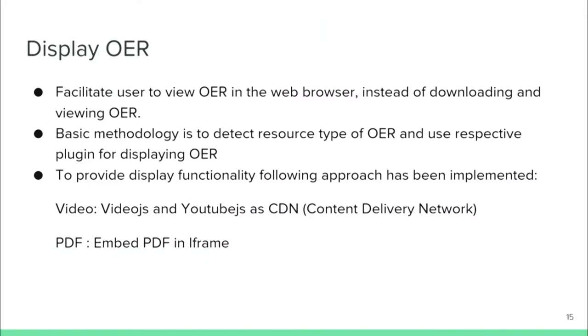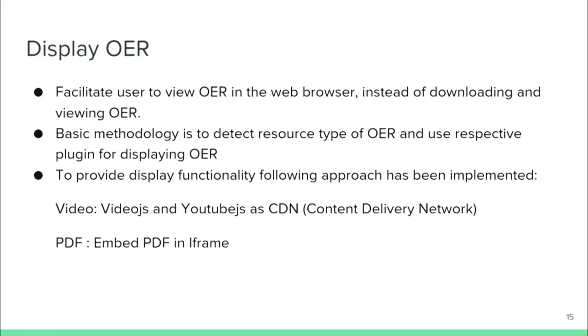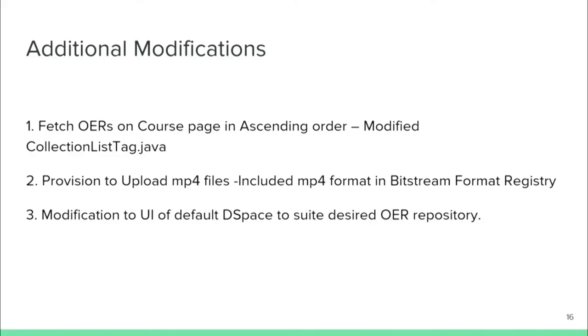Various resources in the OER — videos and PDFs — should be displayed within DSpace itself. We don't want users to download each file or be redirected to YouTube. For video, we used Video.js and YouTube.js as a content delivery network, implemented on a separate server and integrated into our DSpace module. For PDFs, we used iframes. Additionally, DSpace doesn't support MP4 by default, so we changed the MIME field to add that support, and slightly modified the DSpace UI to suit our OER repository.